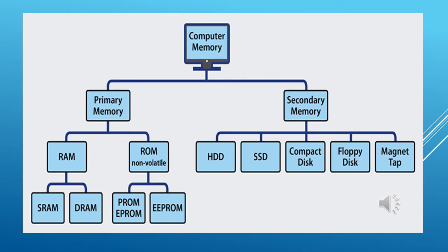Primary memory is divided into two parts: RAM and ROM. ROM is non-volatile and RAM is volatile. RAM is further of two types: SRAM (Static RAM) and DRAM (Dynamic RAM). ROM also has subtypes: PROM stands for Programmable Read Only Memory, EPROM stands for Erasable Programmable Read Only Memory, and EEPROM stands for Electrically Erasable Programmable Read Only Memory.